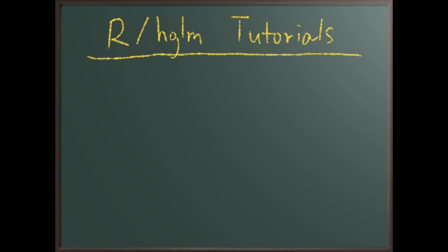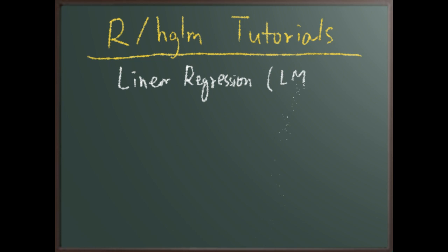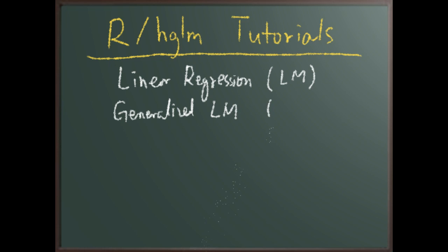In this video I'm going to introduce some theoretical basic concepts of HGLM — hierarchical generalized linear models — and the relationship between other linear models and HGLM. Looking at basic concepts in statistics, we have linear regression, usually called LM, which can be fitted using the LM function in R, and we have generalized linear models, called GLM, fitted by the GLM function in R.